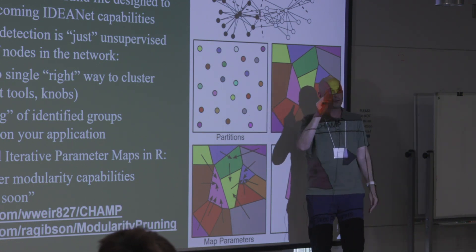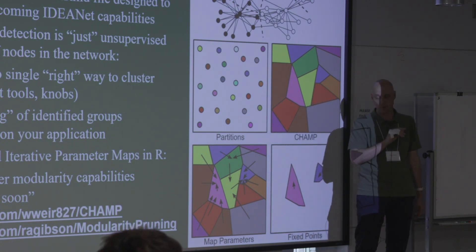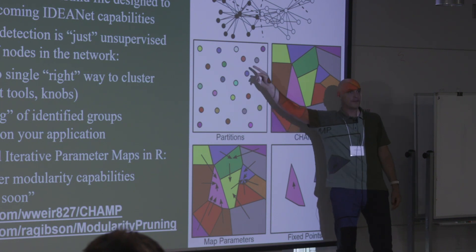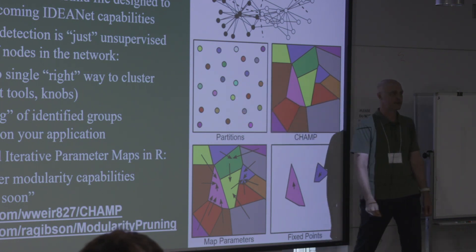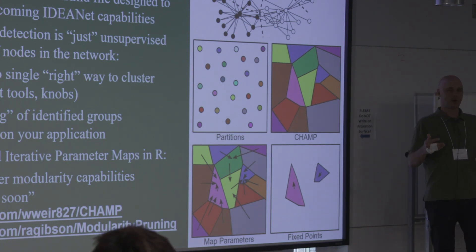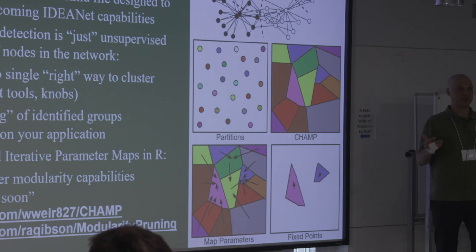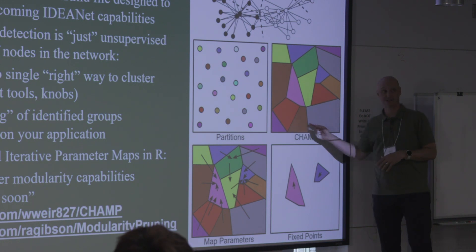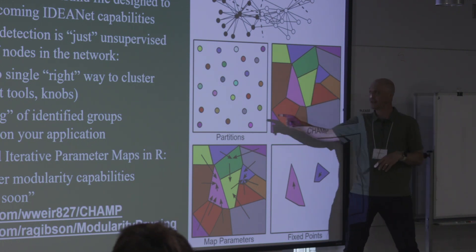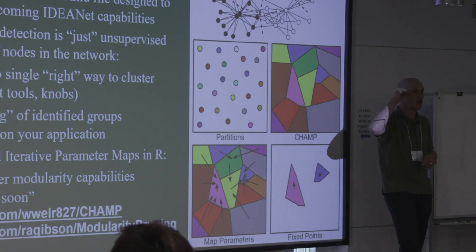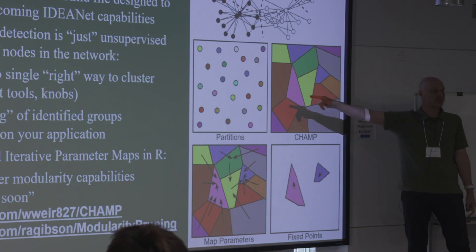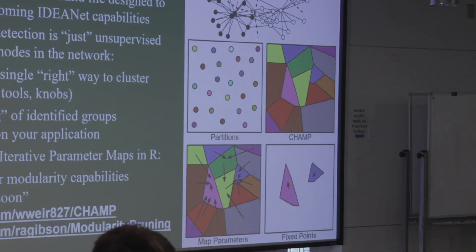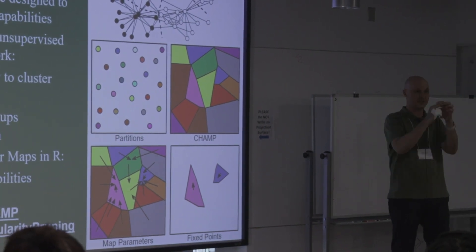The game we're going to play involves two things. One we call CHAMP — we'll tell you what it stands for shortly. What happens in CHAMP is we take all the different partitions of nodes into communities that you might get over your parameter space running different algorithms. Then we say: if what you really wanted to do was optimize modularity at some resolution parameter, we can take that whole set of partitions and post-process them to work out which partition is optimal in what domain of your resolution parameter space.